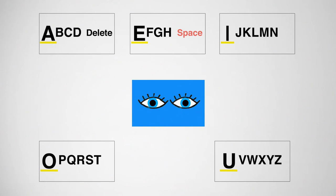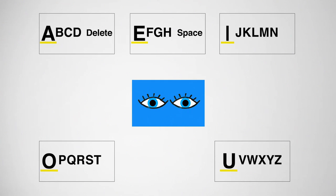The user can communicate that a mistake was made by gazing at the section containing the word 'delete,' or by giving a prearranged signal like multiple rapid eye blinks. The user in this video uses a deliberate eye blink to indicate yes and a rapid eye blink to indicate no. These signals must be reliable, easy for the user to produce, and easy for the communication partner to read.